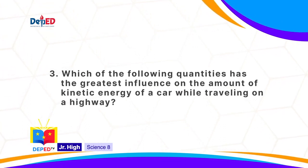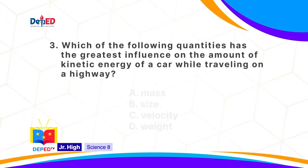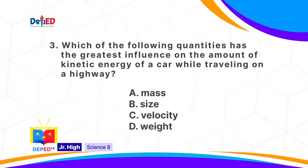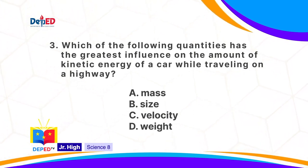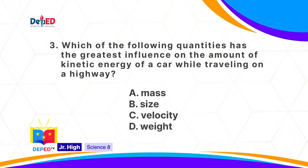Which of the following quantities has the greatest influence on the amount of kinetic energy of a car while traveling on a highway? A. Mass. B. Size. C. Velocity. Or D. Weight. The correct answer is C: velocity.